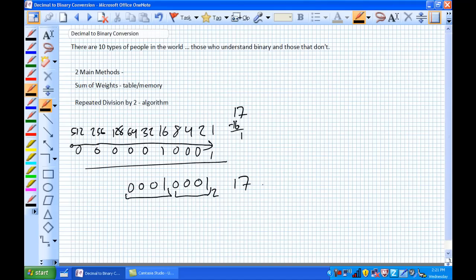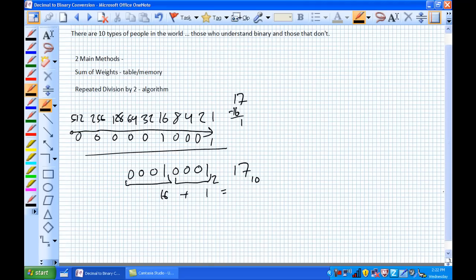If we put this in byte format where there are 8 bits, the correct answer would be 00010001. That is 17 decimal in binary. Check our work: 16 plus 1 equals 17. So this is a super convenient method.